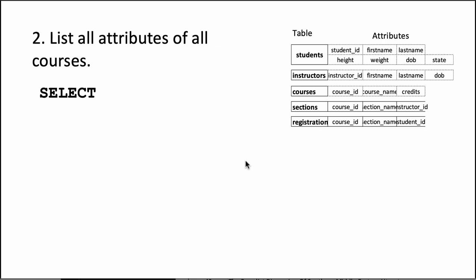So 'all attributes' means we use SELECT *, just like before. The only difference is this time we're looking at the courses table. So the answer is: SELECT * FROM courses. That's it, all done.